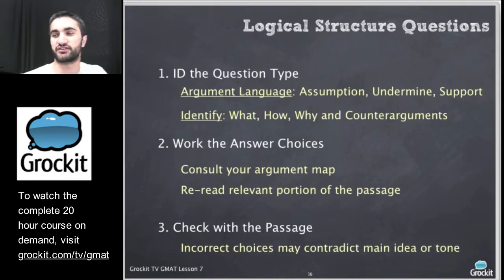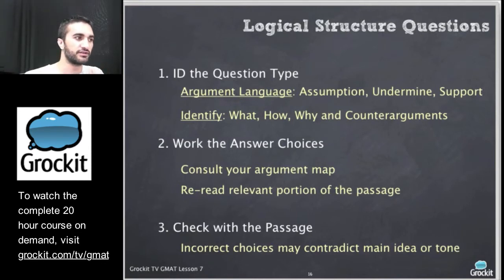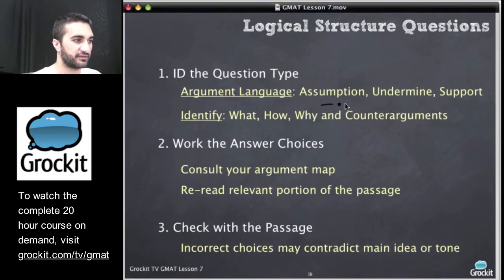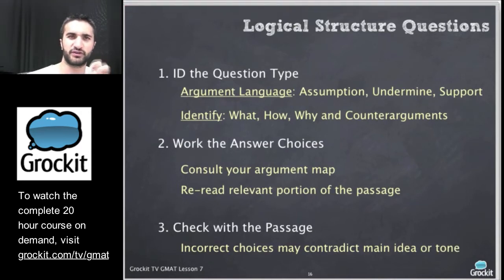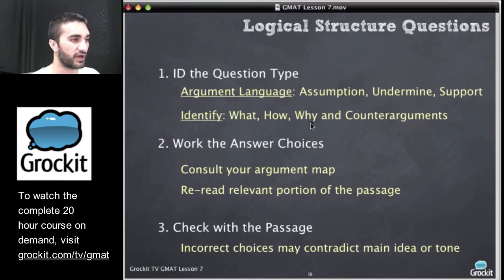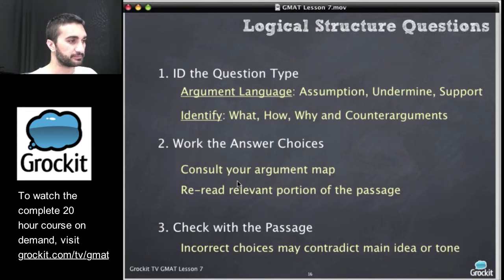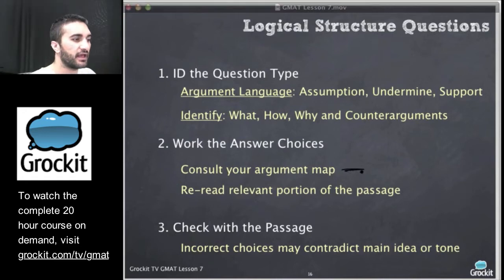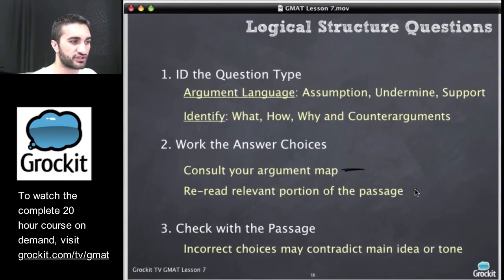Logical structure questions are essentially asking us: how is this passage put together? We can ID them by seeing argumentative language like 'assumption,' 'undermine,' and 'support,' just like we do on critical reasoning. These are like critical reasoning style questions on reading comprehension, where they ask us to identify what, how, why, or counter-arguments. We want to consult the passage map we made and reread relevant portions of the passage.